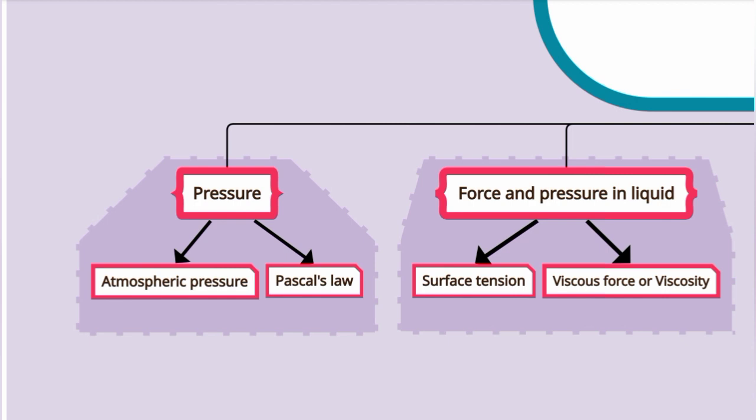Atmospheric pressure. One atmospheric pressure is exerted by the mercury column of height 76 cm in the barometer. That is atmospheric pressure. Atmospheric pressure is measured by the barometer.